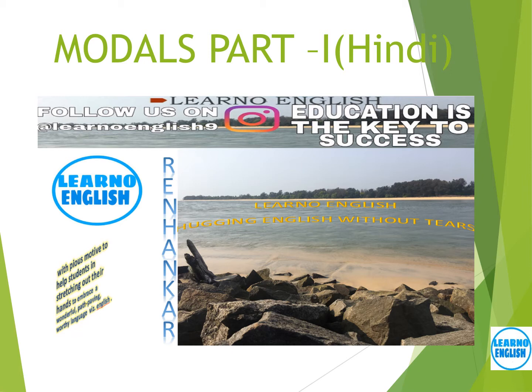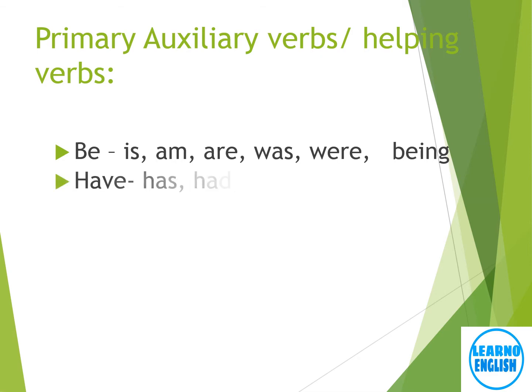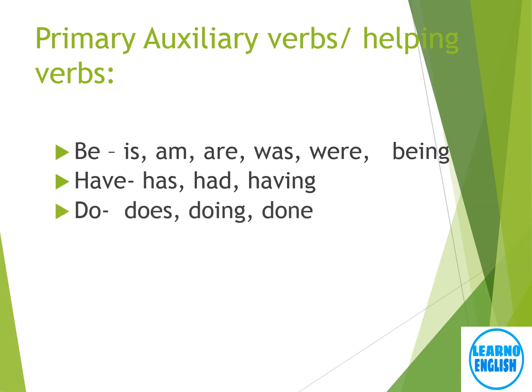लेकिन इससे पहले हम लोग देखते हैं कि auxiliary verbs क्या होता है। Auxiliary verbs को हम लोग helping verbs के भी नाम से जानते हैं। 'Be' के अलग-अलग forms हैं जैसे is, am, are, was, were, being। इसी तरह से 'have' के भी अलग forms हैं: has, had, having। 'Do' के भी अलग forms हैं जैसे does, doing, done।